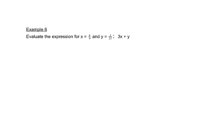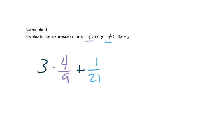Now let's look at this problem. It wants us to substitute four ninths in place of x and one over twenty-one in place of y. So we'll write three times four ninths plus one over twenty-one. We haven't talked about how to do this in our calculators yet, so this would be a great place to do that. We'll use our calculators to find this answer.